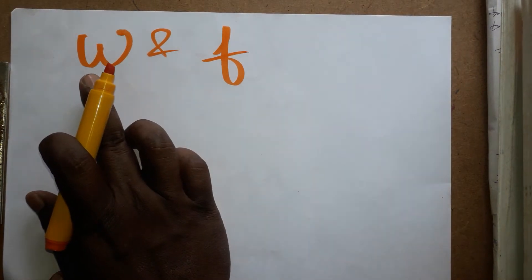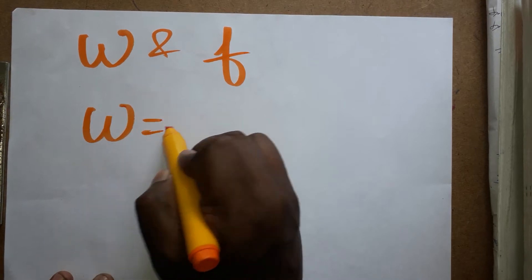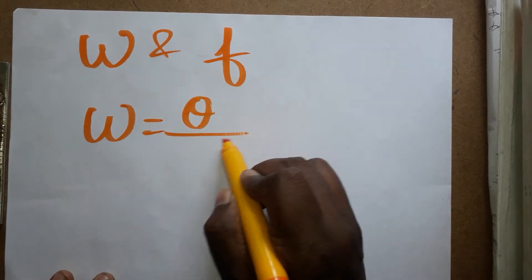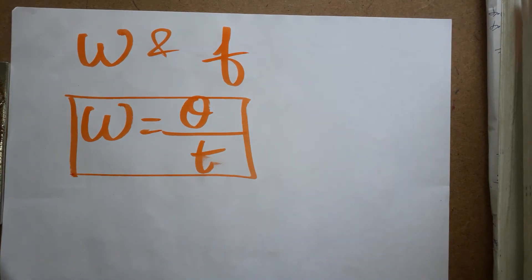Today we are going to learn what is the relation between angular velocity and frequency. Angular velocity is equal to angular displacement divided by time. When the object is